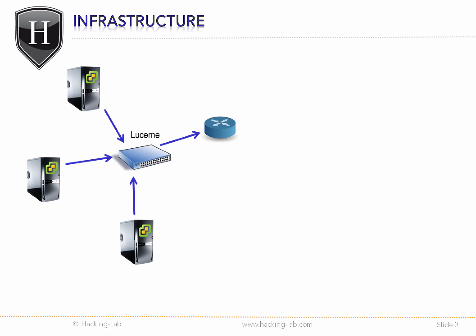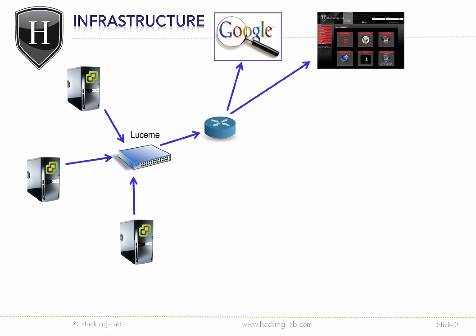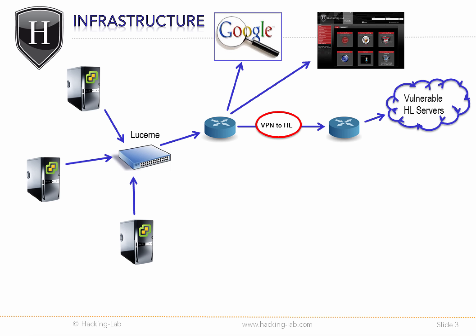The core switch is then connected to an internet router, so teams have free internet access to search the internet or to read the challenges in the Hacking Lab platform. The internet router on premise in Lucerne is then connected to the router on site in the Hacking Lab, or remotely to the Hacking Lab vulnerable server network.